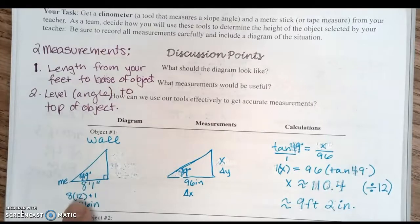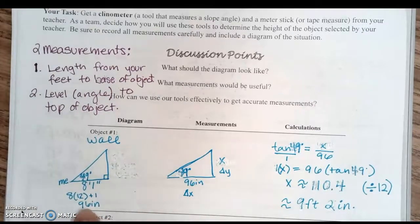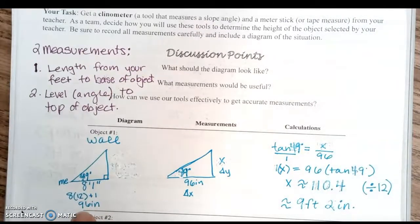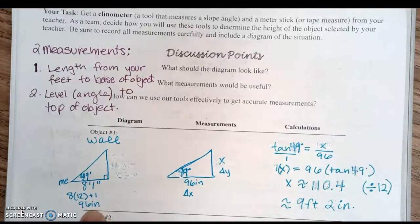Then I changed 8 feet 1 inch into inches. How did I do that? I know there's 12 inches in a foot, so I multiplied 8 times 12—wait, I forgot to add the 1. That would be 97 inches. But let's say it's 8 feet even, so we're going to use 96 inches.